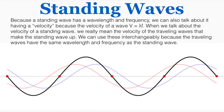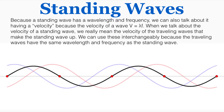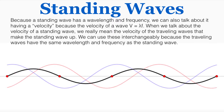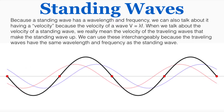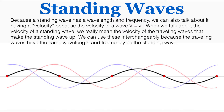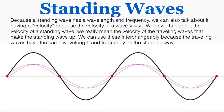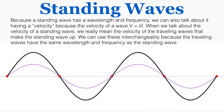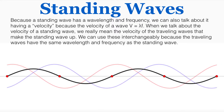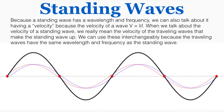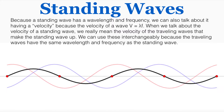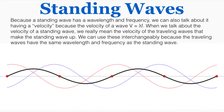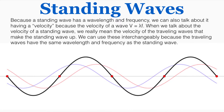Because a standing wave has both a wavelength and frequency, we can also talk about it having a velocity — in quotes — because the velocity of a wave equals wavelength times frequency. When we talk about the velocity of a standing wave, we really mean the velocity of the traveling waves that make it up. We can use these interchangeably because the traveling waves have the same wavelength and frequency as the standing wave.